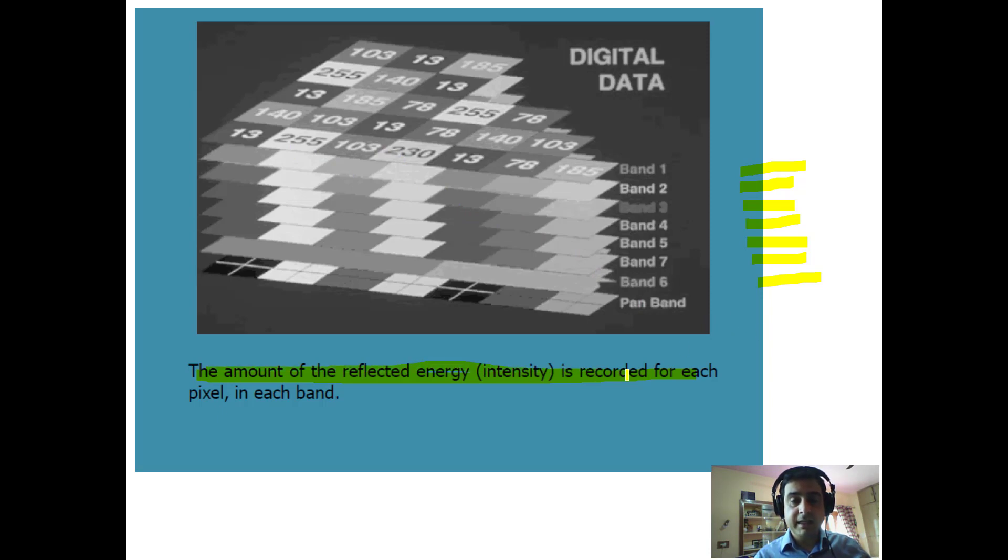The amount of energy reflected, the intensity, is recorded for each pixel in each band. The top band, band 1, has some numbers. Below it is band 2, recorded in a different wavelength. Below that is band 3, recorded in yet another wavelength. Each pixel corresponds to a value in each band, which may vary from band to band. The amount of energy reflected is recorded and varies depending on the wavelength.